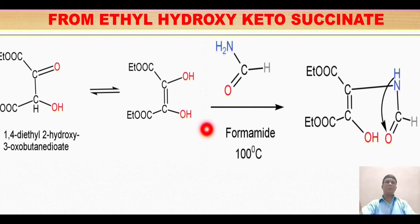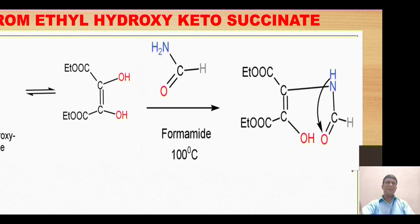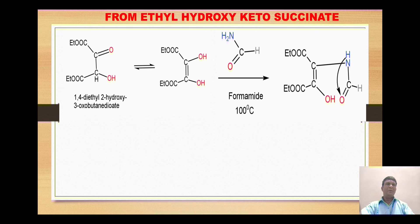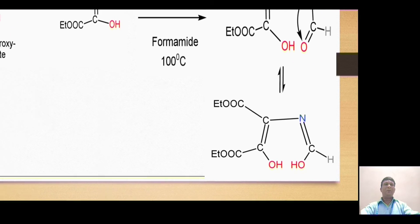This intermediate reacts with formamide (HCONH2). The amino group attacks the carbon, releasing a water molecule, forming a bond between the carbon and nitrogen. In the resulting structure, the aldehyde portion HCO is attached with NH. This hydrogen may migrate over the electronegative oxygen via tautomerism, generating a double bond between nitrogen and carbon while converting the oxo group to a hydroxyl group, forming a dihydroxy derivative.